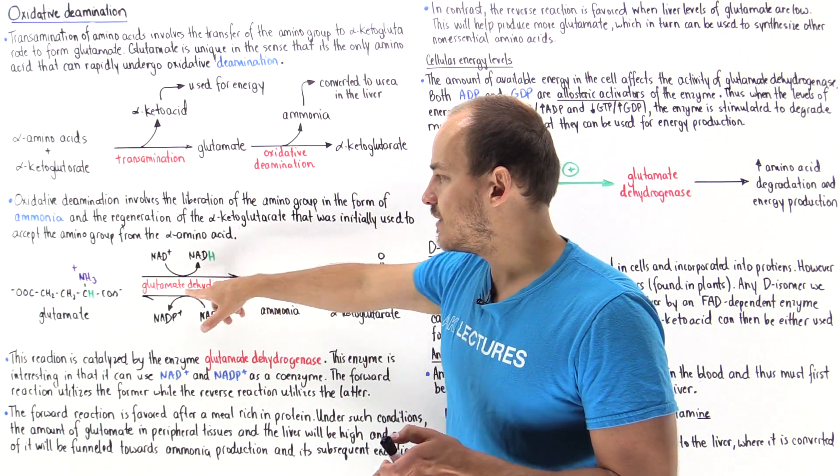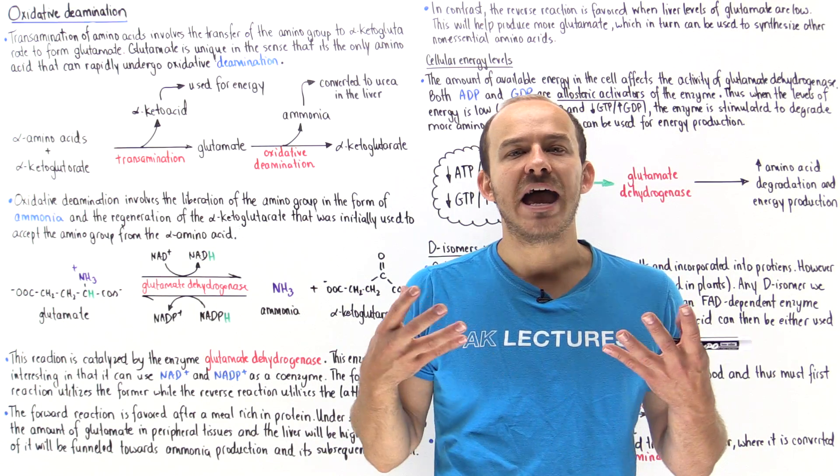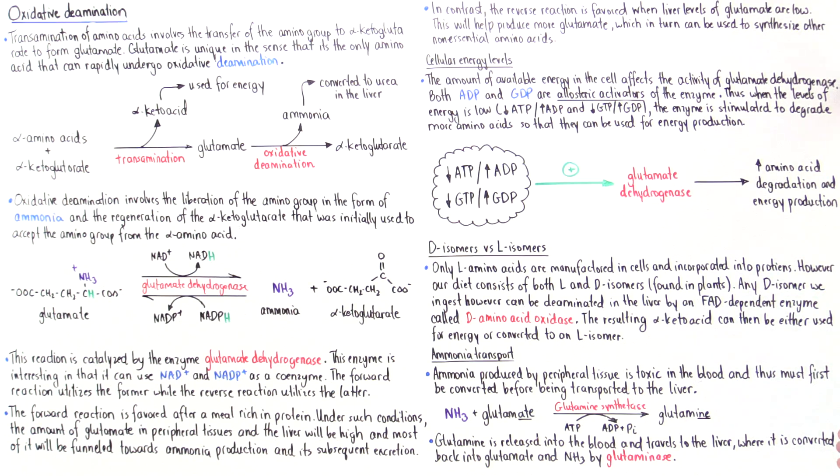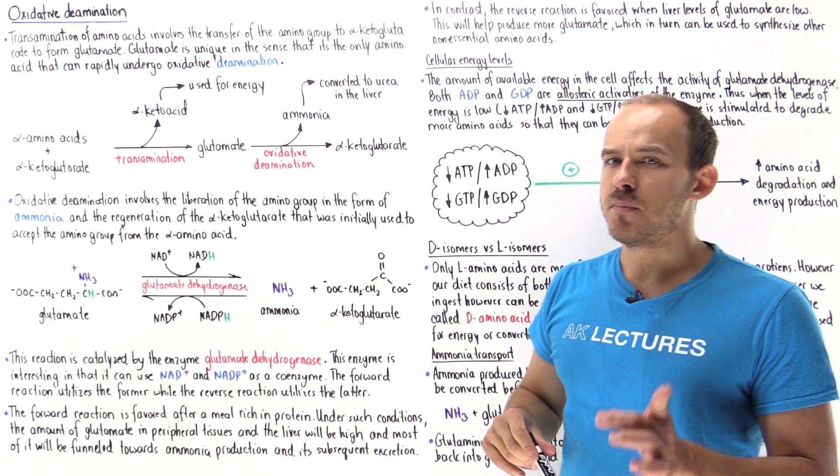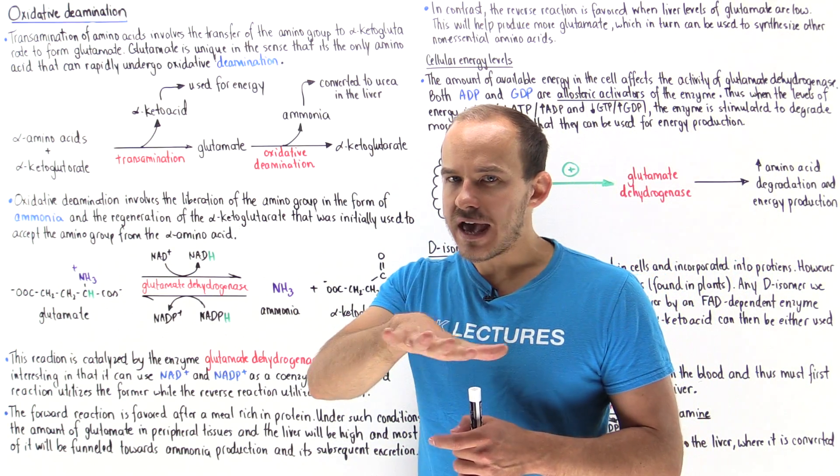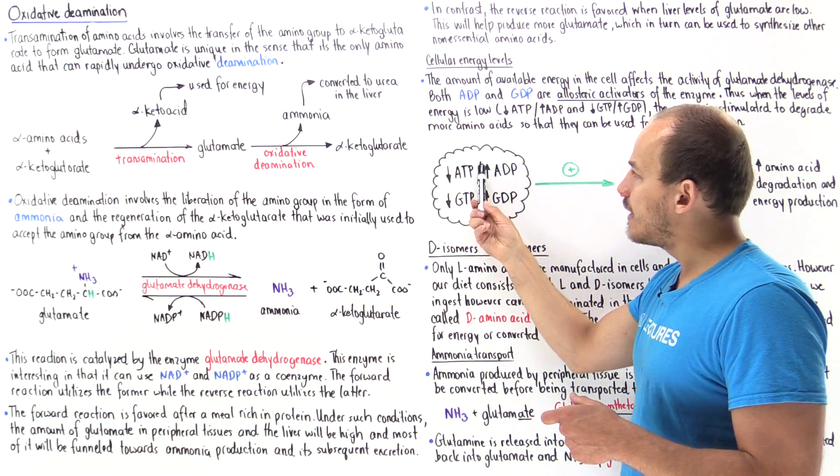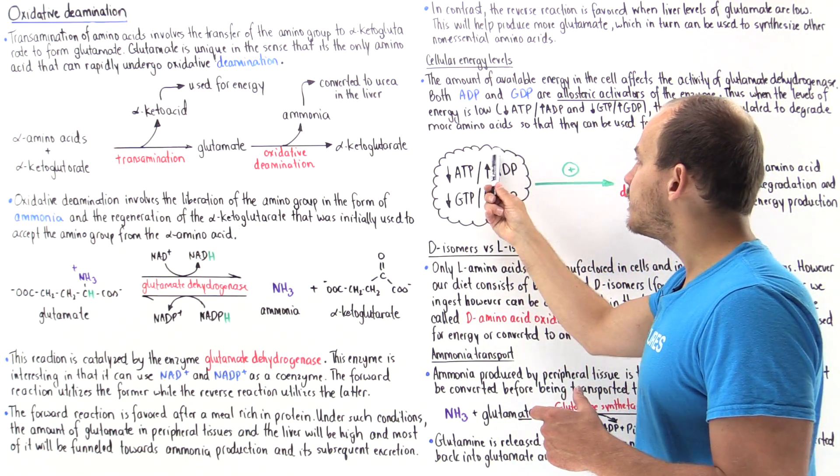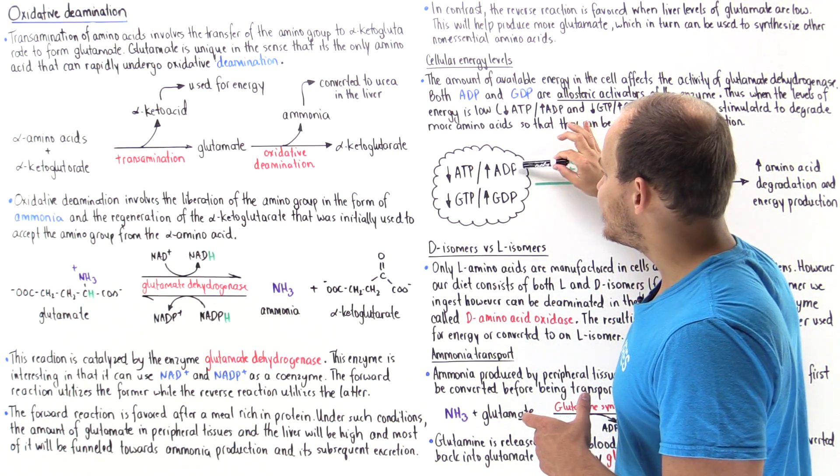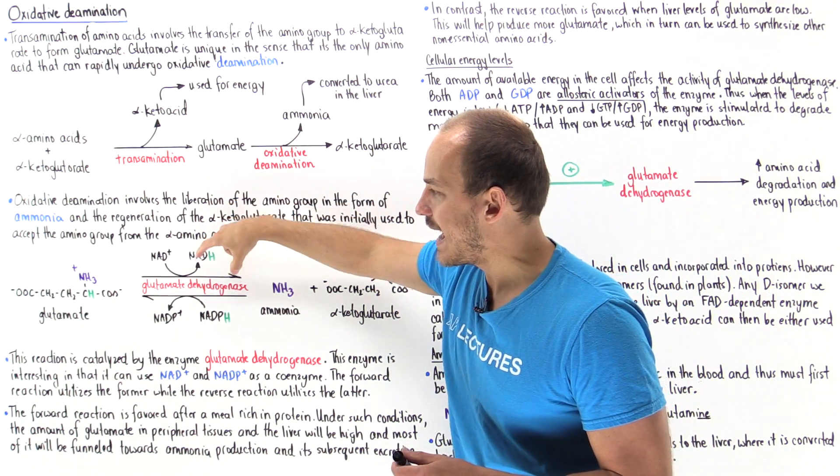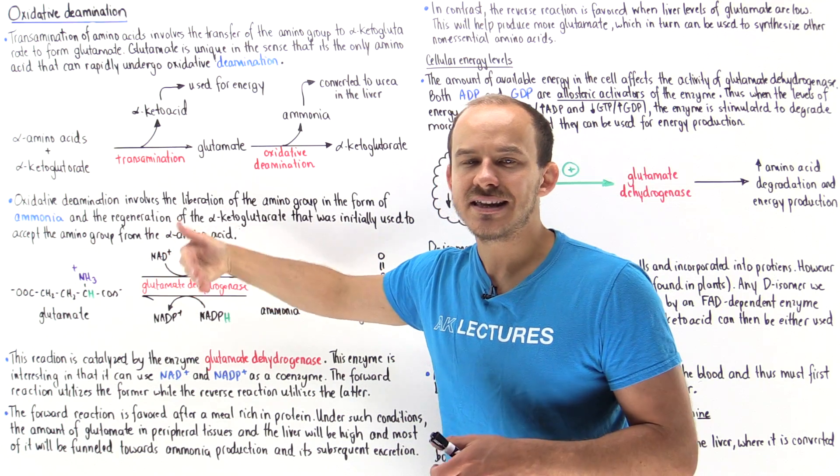What also affects the activity of glutamate dehydrogenase is the level of energy within our cells. The amount of available energy in a cell affects the activity of glutamate dehydrogenase. Both ADP and GDP can act as allosteric activators of the enzyme. If we have low levels of energy within our cell that means we have few ATP molecules and few GTP molecules and a lot of ADP and GDP. The ADP and GDP can act as allosteric activators binding onto allosteric sites on the enzyme and increasing the enzyme's activity.